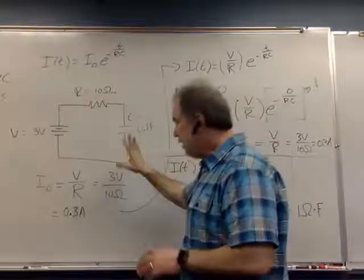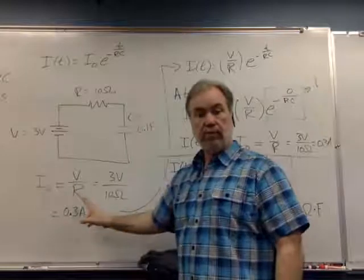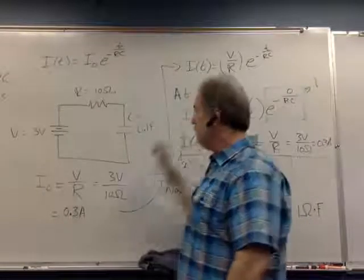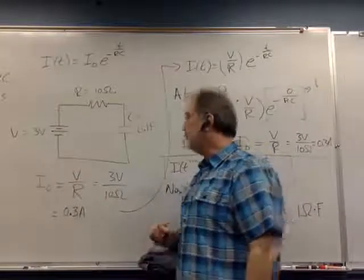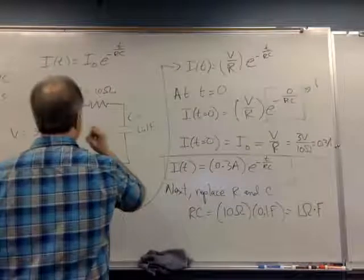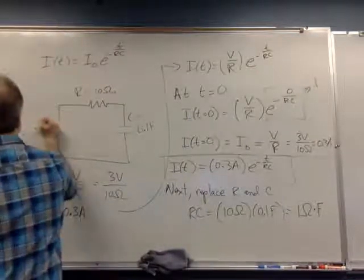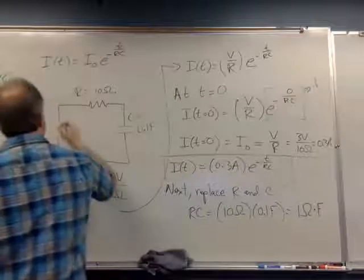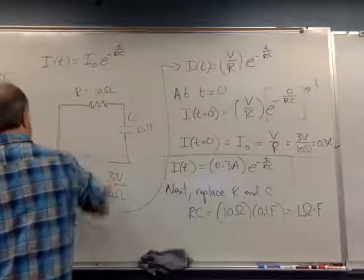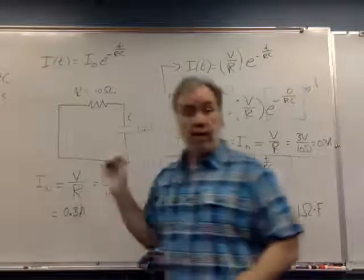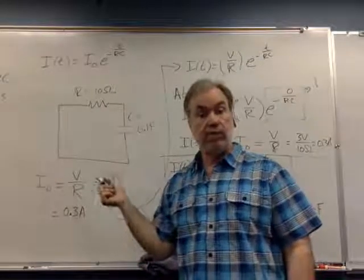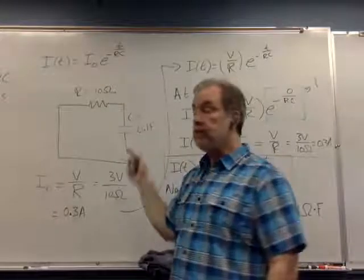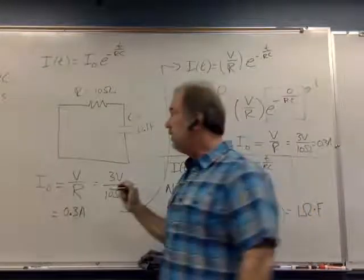I went through and calculated what the initial current would be once you close the circuit, once the capacitor is allowed to discharge. By the way, I'm sorry, this is, our new circuit diagram actually no longer includes the battery. I used that circuit so that I could calculate the initial current, but now that I have the initial current, I no longer need the battery. That was just for computational purposes. The real circuit, of course, doesn't actually have a battery.